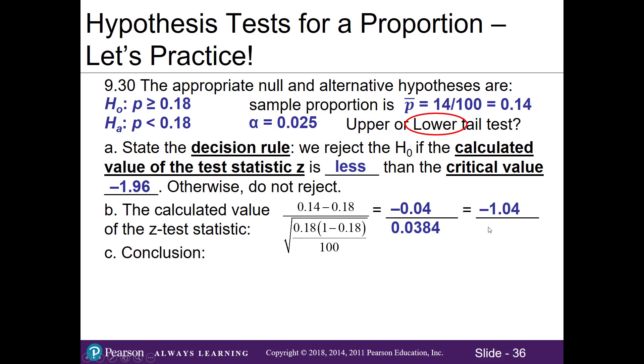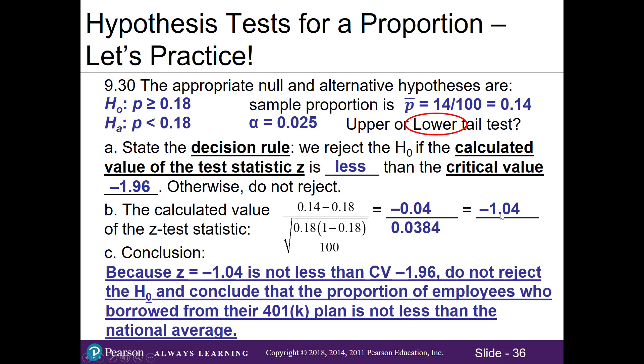Then dividing these two numbers, our Z test statistic is negative 1.04. If we use the critical value approach for our conclusion, since our test statistic in Part B of negative 1.04 is not less than our critical Z value of negative 1.96, if we imagine it and we draw it in the distribution, where does our test statistic fall? Is it in the rejection region or is it in the do not reject region? As you can see, because it's not less than our cutoff point, we do not reject the null and can conclude that the proportion of employees who borrow from their 401k plan is not less than the national average.